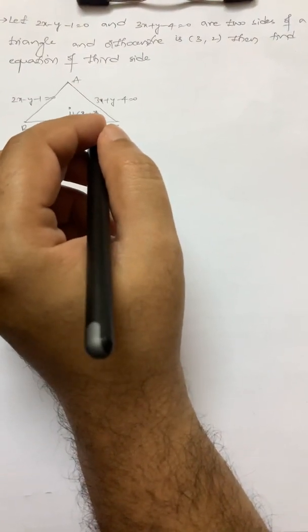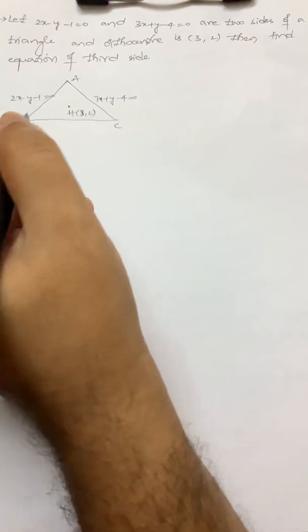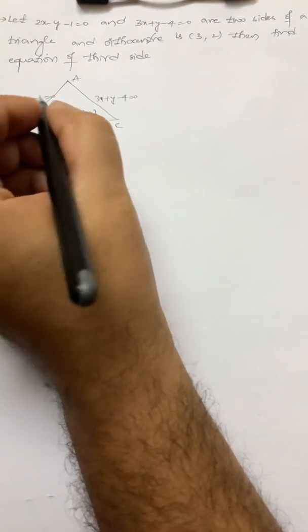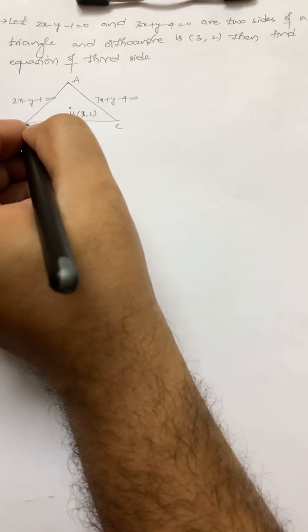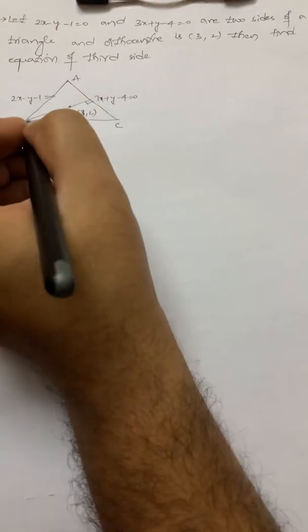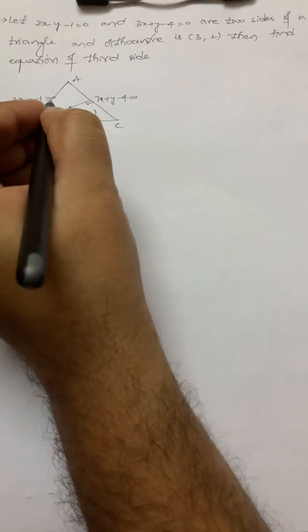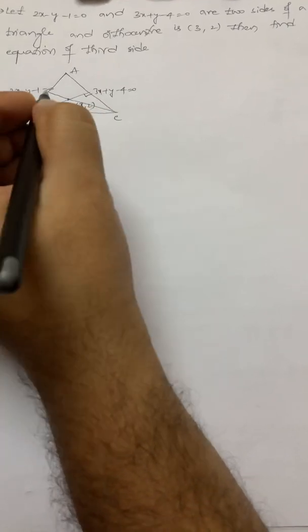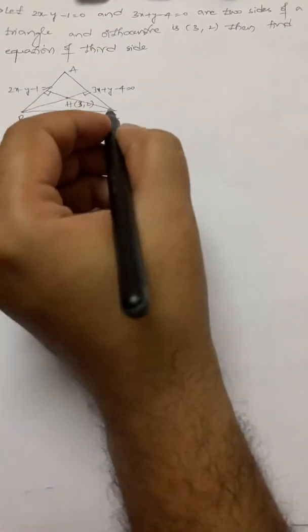Now what we do is, we will use the concept of altitudes directly. Because if I want to find vertex B, I have one line, and if I get another line through B using altitudes, I will get B. Similarly, using the altitude concept again, I will find C.